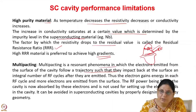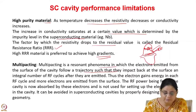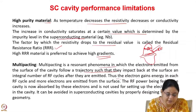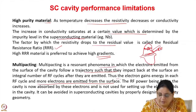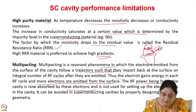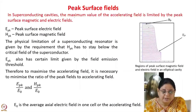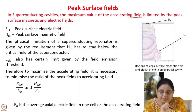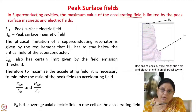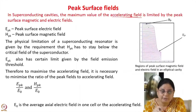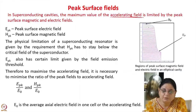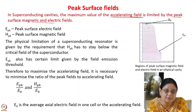Multipacting is avoided by properly designing the cavity surface geometry. The electron gains energy in each RF cycle and more electrons are emitted; the RF power fed into the cavity is absorbed by these electrons and not used for setting up electric fields. This can be avoided by proper cavity geometry design. In superconducting cavities, the maximum accelerating field is limited by the peak surface magnetic and electric fields. In normal conducting cavities the limit comes from power dissipation and the Kilpatrick limit, but in superconducting cavities it is the peak surface field values.